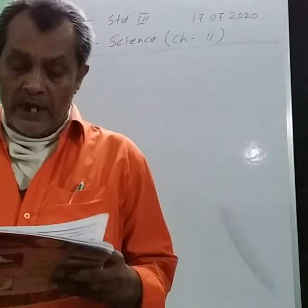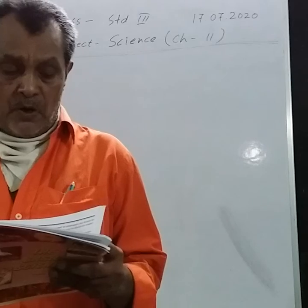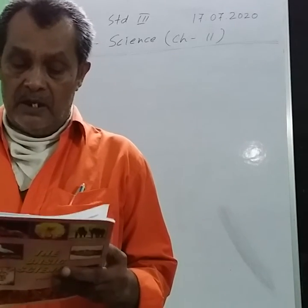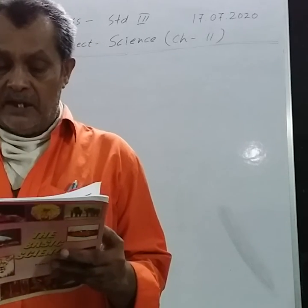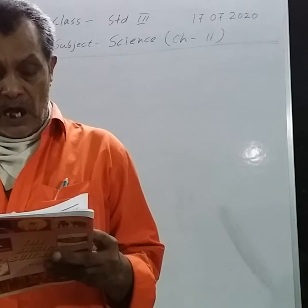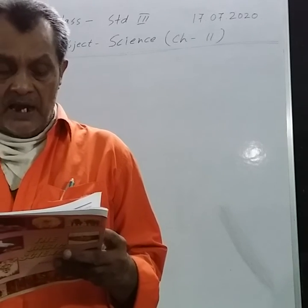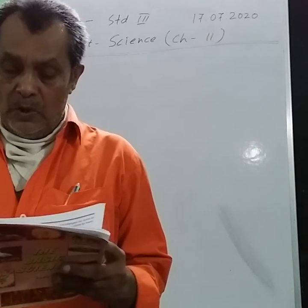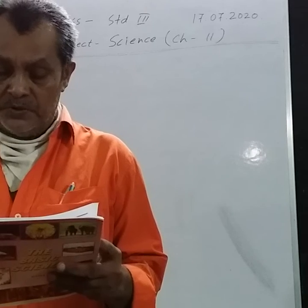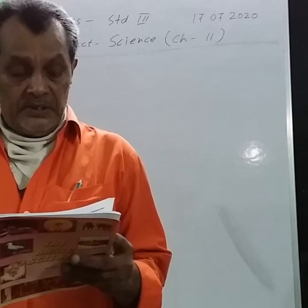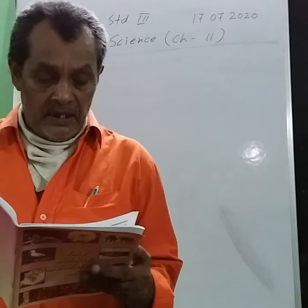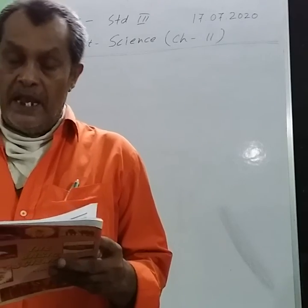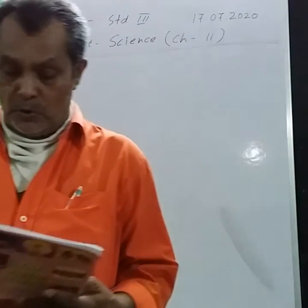Water from lakes, seas, and ponds are converted into water vapour by the sun, and then to clouds, and finally to rain clouds, and back to lakes, ponds, and seas. This cycle is called the water cycle.